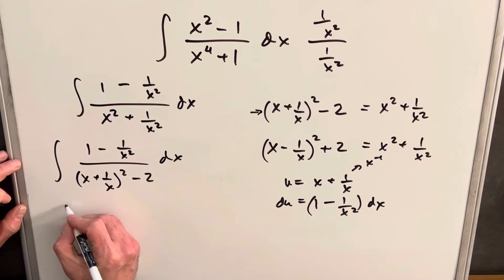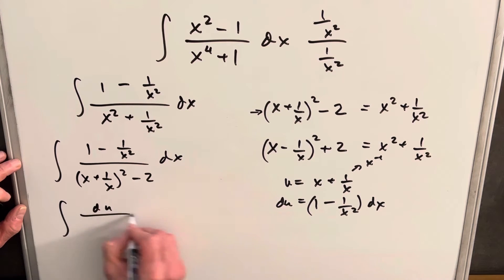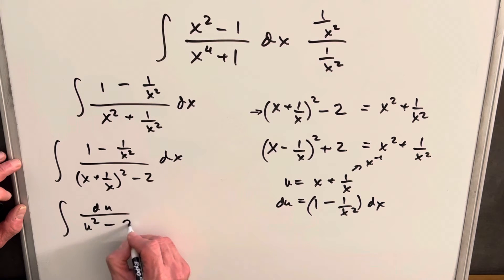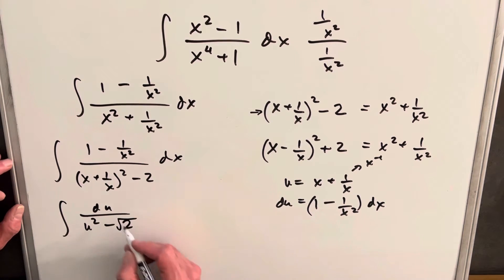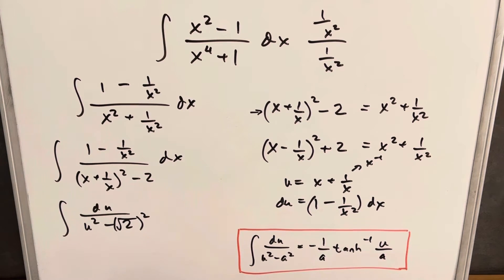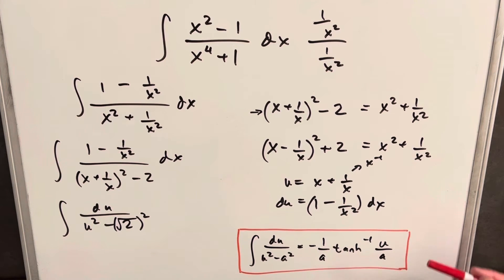So making this substitution, the integral becomes du over u squared minus 2. Writing 2 as the square root of 2 squared, we have it right where we want it, because we can apply the inverse hyperbolic tangent formula, which is very useful for a situation like this.